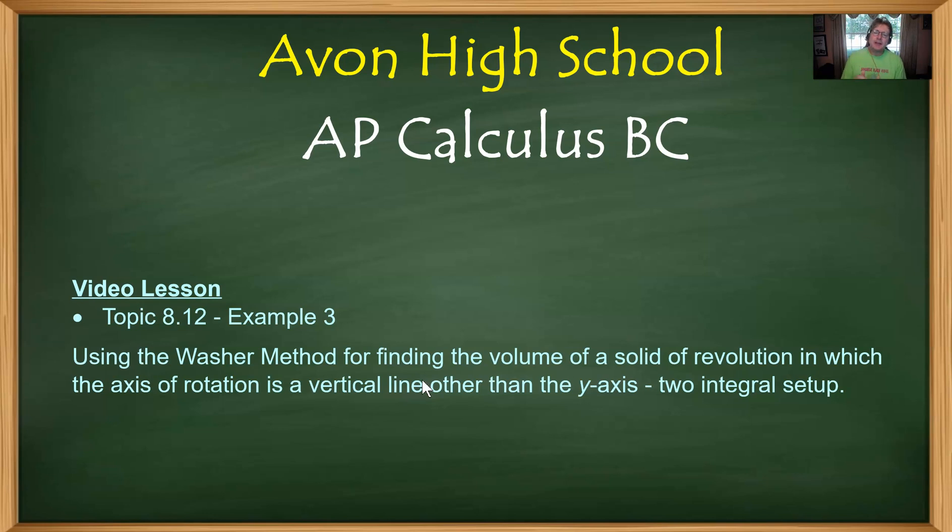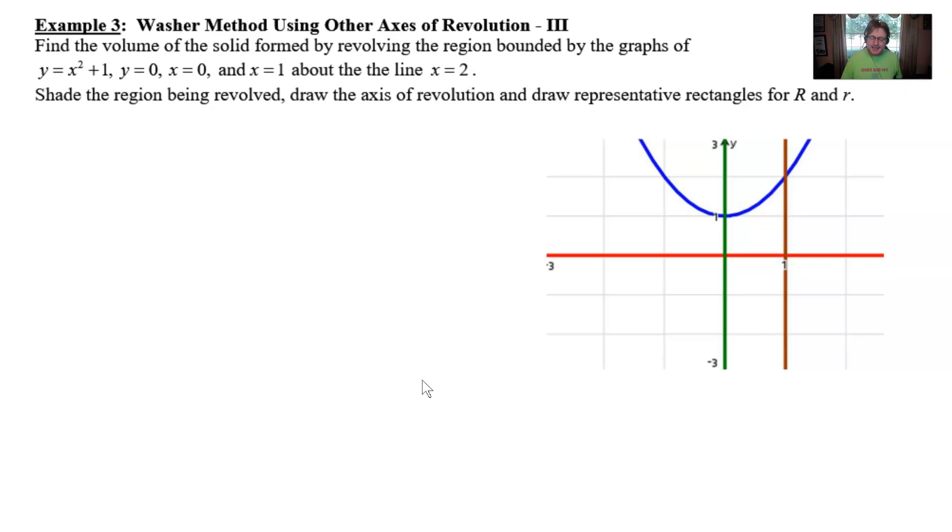What we're going to be doing here is talk about the washer method for finding the volume of a solid of revolution where the axis of revolution is going to be some vertical line other than the y-axis, which makes it probably among the toughest ones. And to add a little bit of extra rigor to this one, it's going to require a two integral setup.